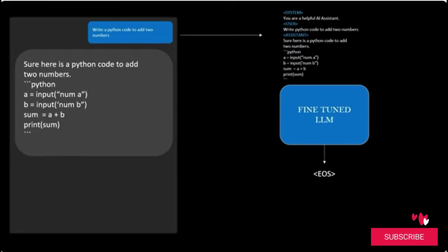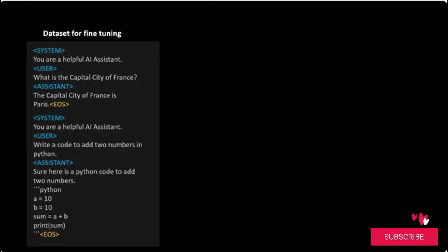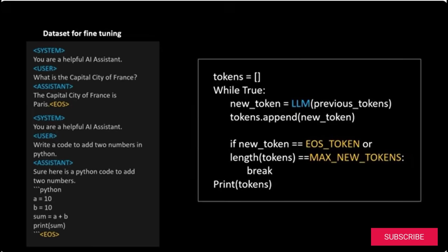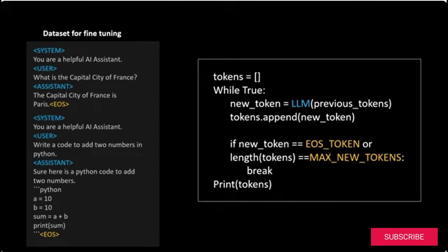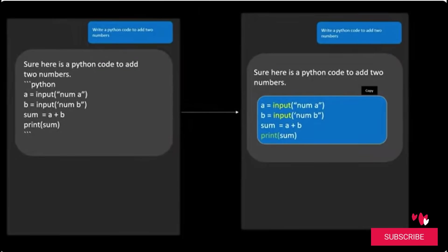By default, an LLM doesn't know when to stop — it continues to generate new tokens given the prior context. So we add a special end-of-sentence token after each example in the training dataset. Thus, when using an LLM, the model stops either when it encounters the end-of-sentence token or when a predefined maximum token limit is reached. Finally, responses like code snippets are parsed and formatted for better readability.